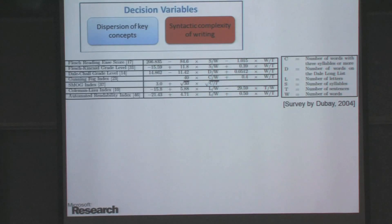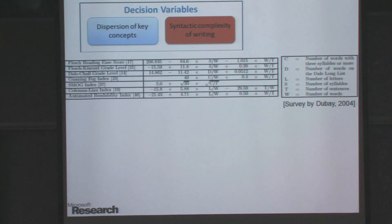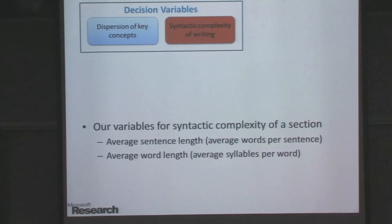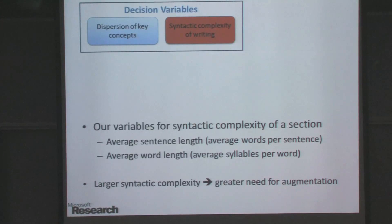When we studied readability formulas, we noticed they have been obtained with weights learned on specific corpora, and it was not clear whether those corpora would apply to the setting of textbooks. Further, it was not clear which of these different formulas to use. Instead, we noticed that all these formulas have two underlying variables.